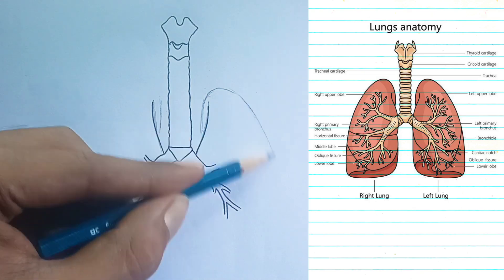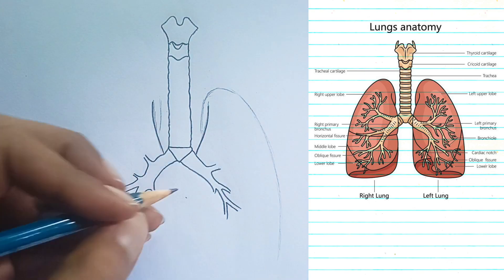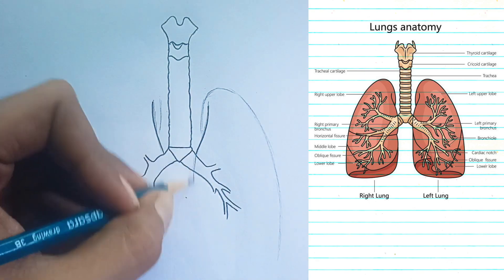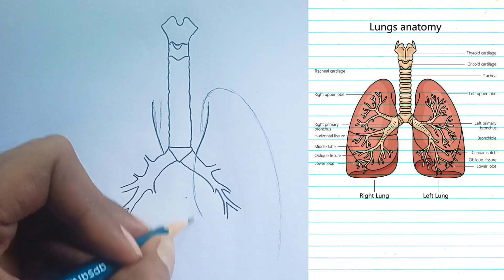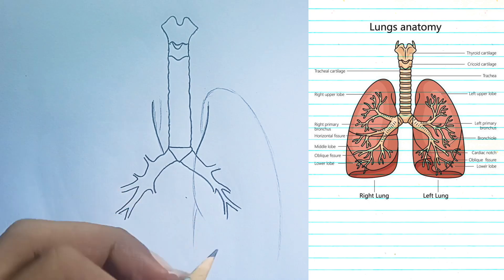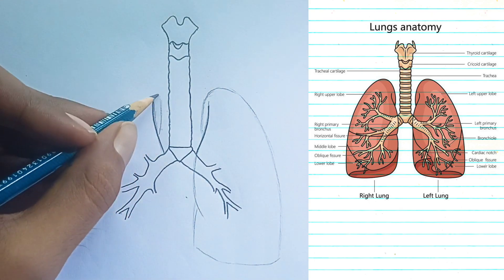Left primary bronchus: the main airway branching off the trachea into the left lung. Cardiac notch: an indentation on the medial surface of the left lung which accommodates the heart.